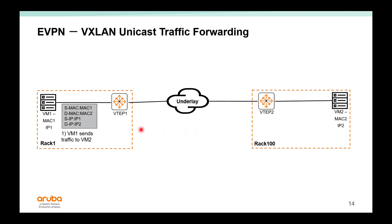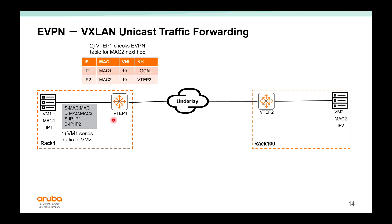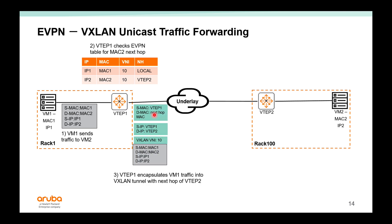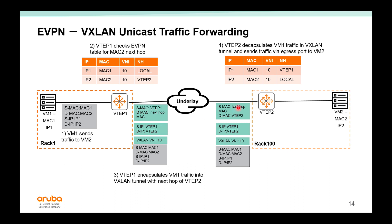For VXLAN traffic forwarding: VM1 sends traffic to VM2 connected to VTEP2. VTEP1 receives the original traffic, looks up its table, and determines that to reach MAC2 with IP2 the next hop is VTEP2. It encapsulates the original traffic with an outer header: source MAC is VTEP1, destination MAC is the next hop in the underlay, source IP is VTEP1, destination IP is VTAP2, with the VNI attached. VTEP2 receives the encapsulated packet, de-encapsulates it, confirms MAC2 is local on VNI 10, and forwards it out the appropriate port to VM2.